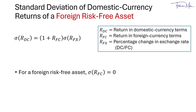Let's explore the standard deviation of domestic currency returns for a foreign risk-free asset. The formula is shown here. The standard deviation of R_DC, the return in domestic currency terms, equals 1 plus R_FC times the standard deviation of R_FX. R_DC is the return in domestic currency terms, R_FC is the return in foreign currency terms, and R_FX represents the percentage change in the exchange rate between domestic and foreign currencies, quoted as DC per FC.